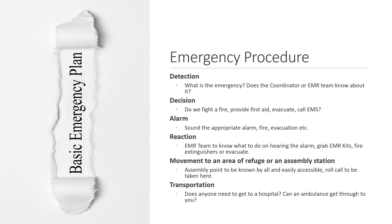An emergency procedure or an emergency response plan should always follow a specific sequence. Firstly, detecting what the emergency is. In the detection phase, we need to identify what emergency we are facing. This will help us to make a decision. The decision to fight a fire, provide first aid, evacuate or call emergency services must always be dictated by the emergency coordinator. Once the decision has been made, the alarm can be sounded — for fire, evacuation, or a different type of alarm based on the emergencies within your company.